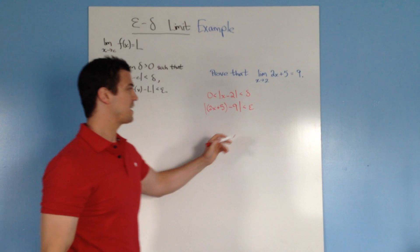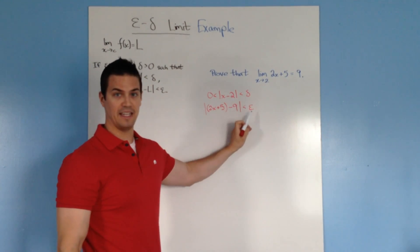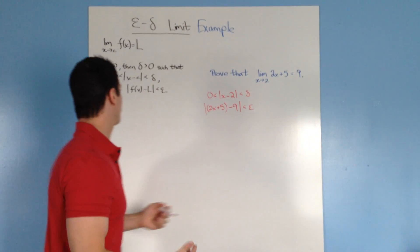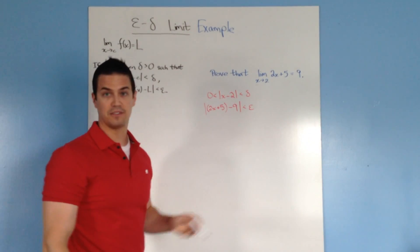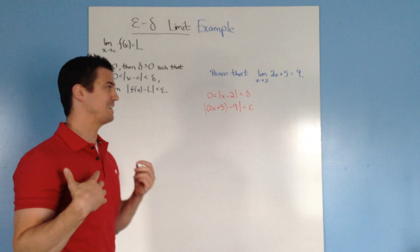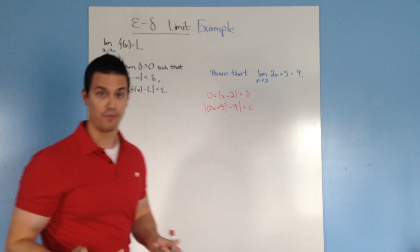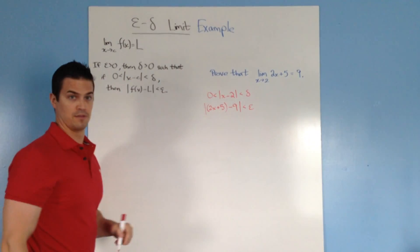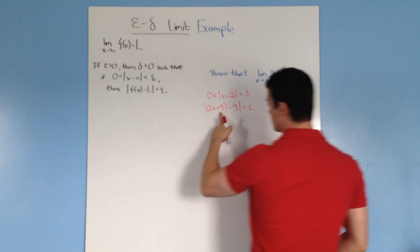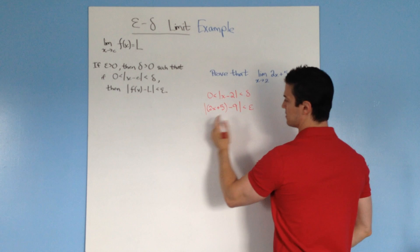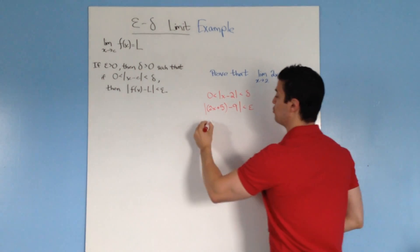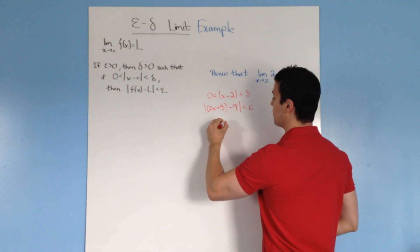Next, we're going to find the connection between delta and epsilon. We need to make sure this holds true. So the first thing I want to do is simplify this. We have the quantity 2x plus 5 minus 9. So 5 minus 9... you should end up with the absolute value of 2x minus 4 is less than epsilon.